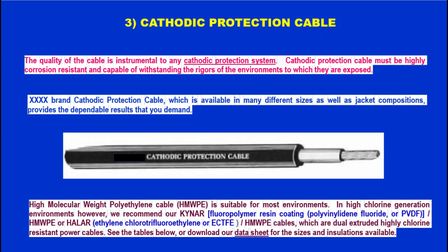The next category of CP system components is Cathodic Protection Cables. The quality of the cable is instrumental to any cathodic protection system. CP cable must be highly corrosion resistant and capable of withstanding the rigors of the environments to which they are exposed. The manufacturer's cathodic protection cable is available in many different sizes and jacket compositions.